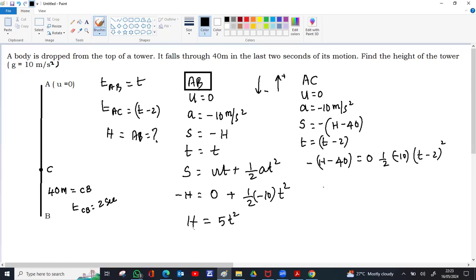So the minus minus get cancelled both sides. H minus 40 equal to 5 into... we expand t minus 2 whole square: t² minus 2ab 4t plus 4.